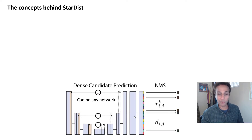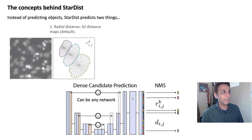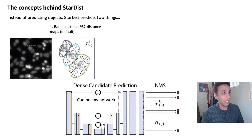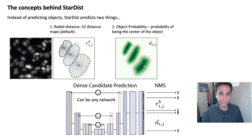The concept behind StarDist: it has a deep learning network — it can be a UNet, for example. What does this network predict? It predicts two things: first, the radial distances — you have an object, you have an object center, and it predicts 32 radial distance maps for these objects. Think of it as generating 32 distance maps. The other prediction is the object probability — the probability of a pixel being the center of the object, which decreases as you move outward.